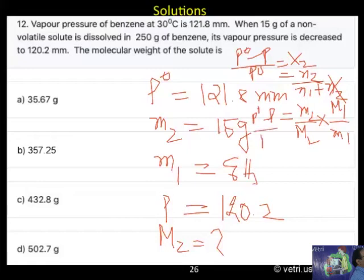You substitute now. P0 minus P by P0 is equal to M2 by M2 by M1 by M1. From this, you substitute and calculate. The answer is already given, B is the correct answer.